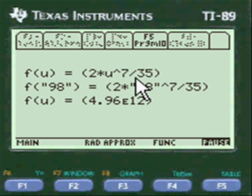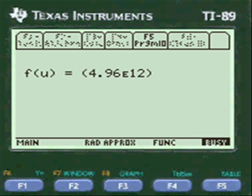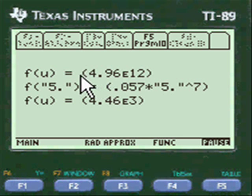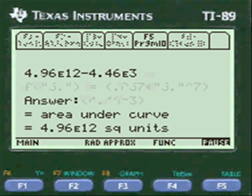And then with u equals 98, the upper limit, you have to go back to the original function and put it in here. The original integral that you've found, and that equals 4.96 e to the 12. And then the lower limit is 5, so u is 5, so you're adding that into the original function for u and then we get 4.46 e to the 3. You subtract the lower limit from the upper limit. Here's the area under the curve, 4.96 e to the 12 square units.